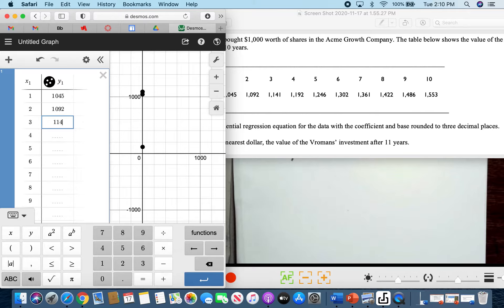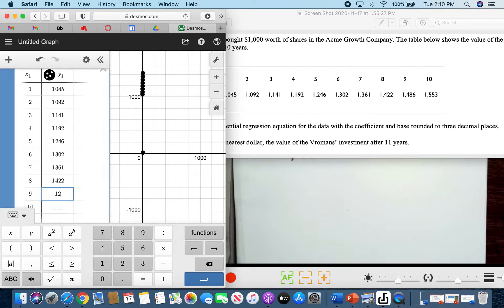So you have 1,041, then you have 1,092, 1,141, 1,192, 1,246, 1,302, then 1,361, 1,422, 1,486, and then the last one is 1,553.